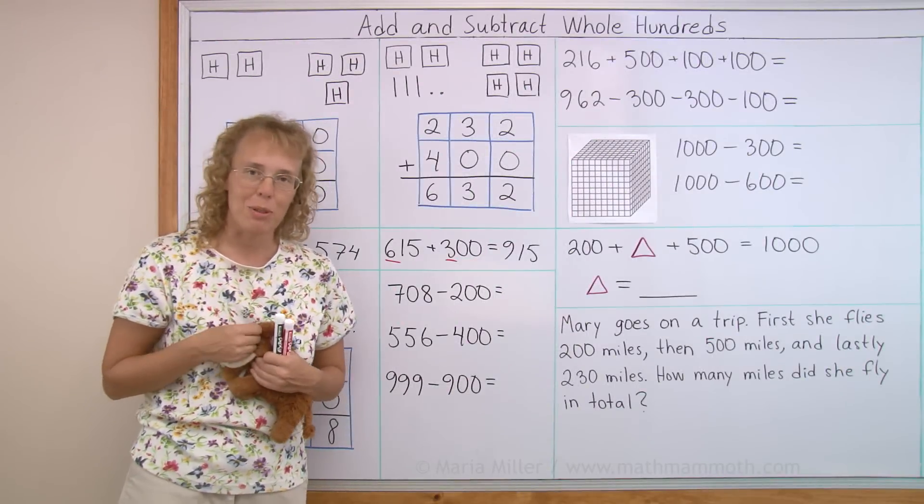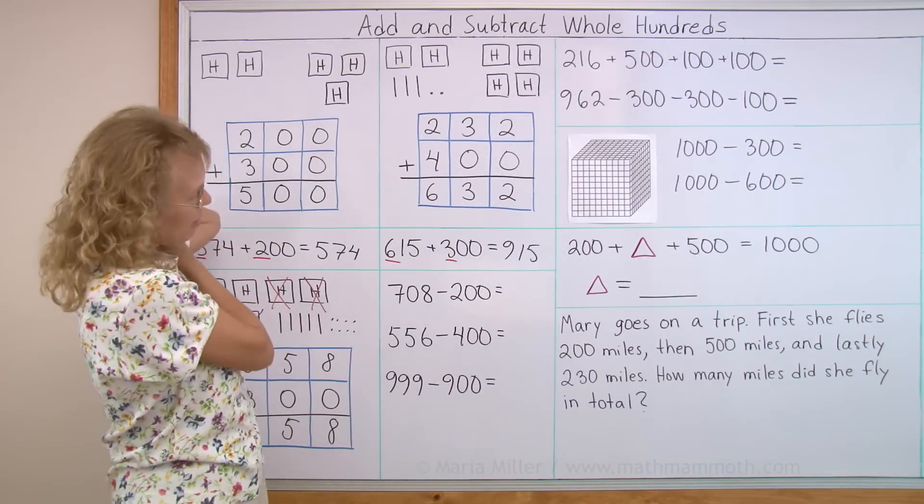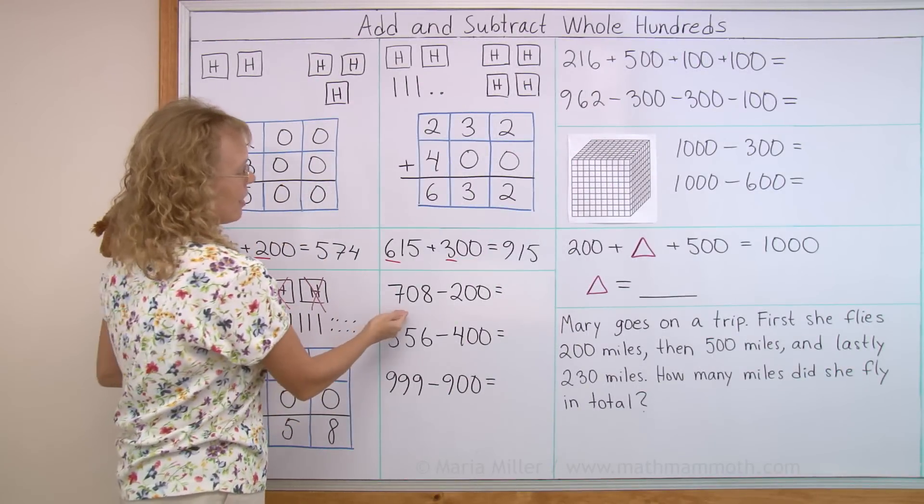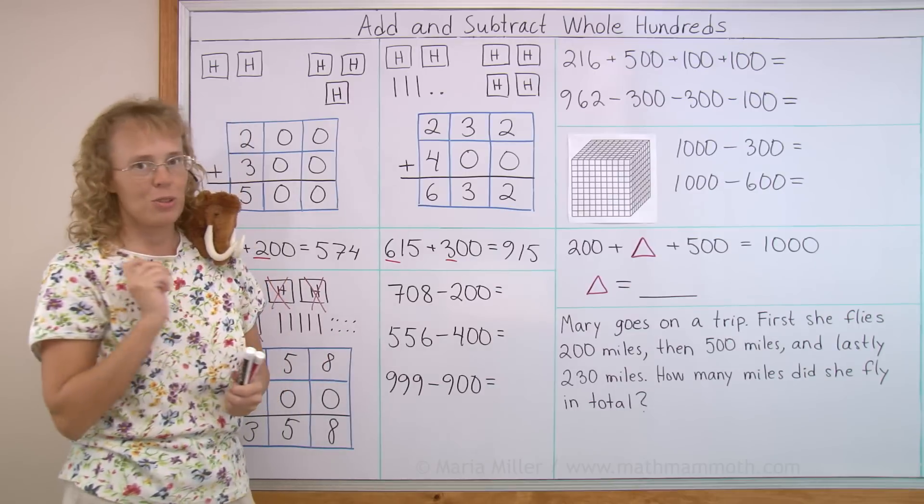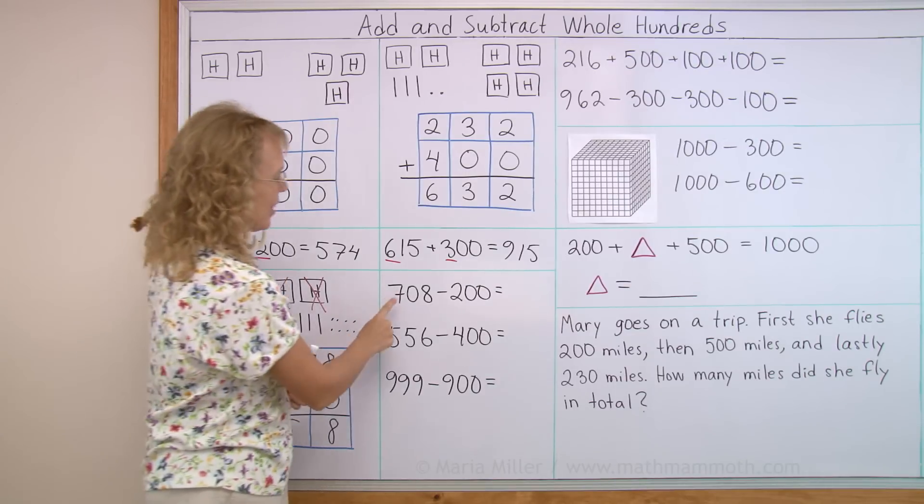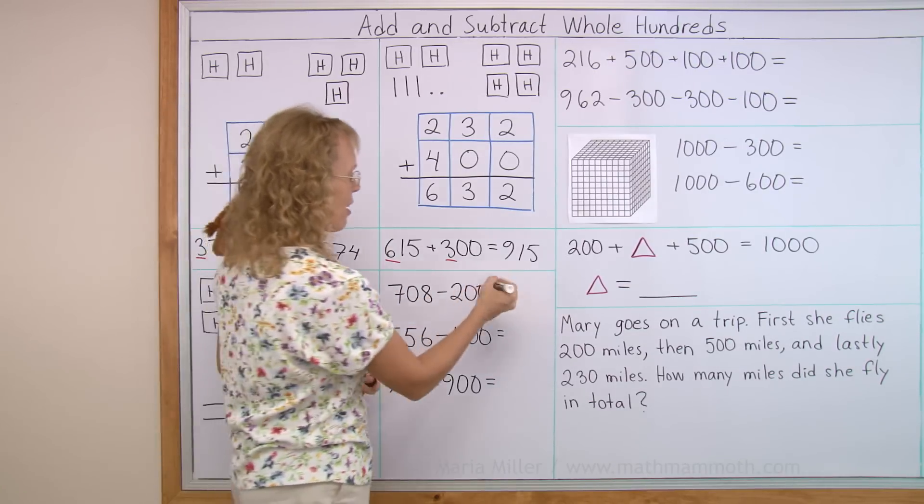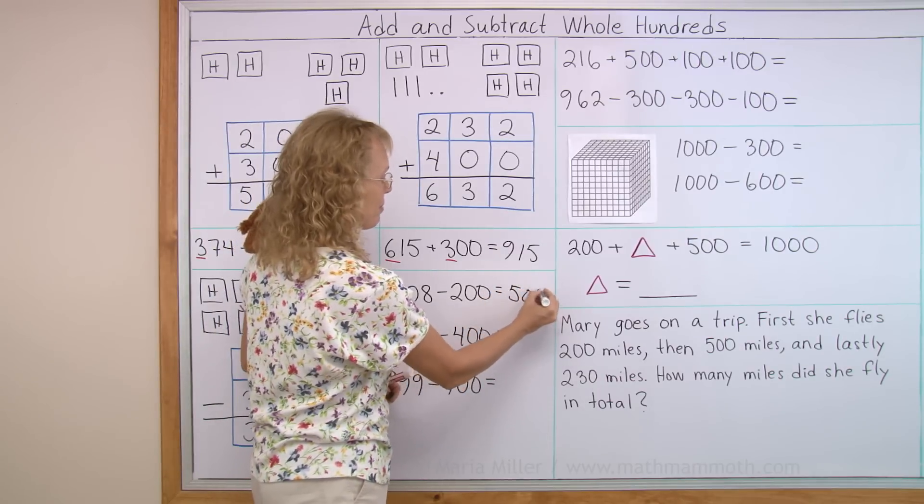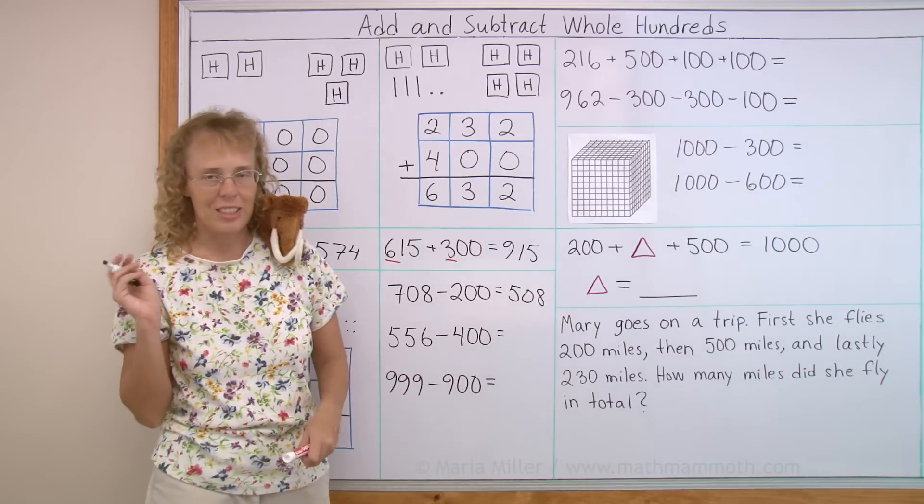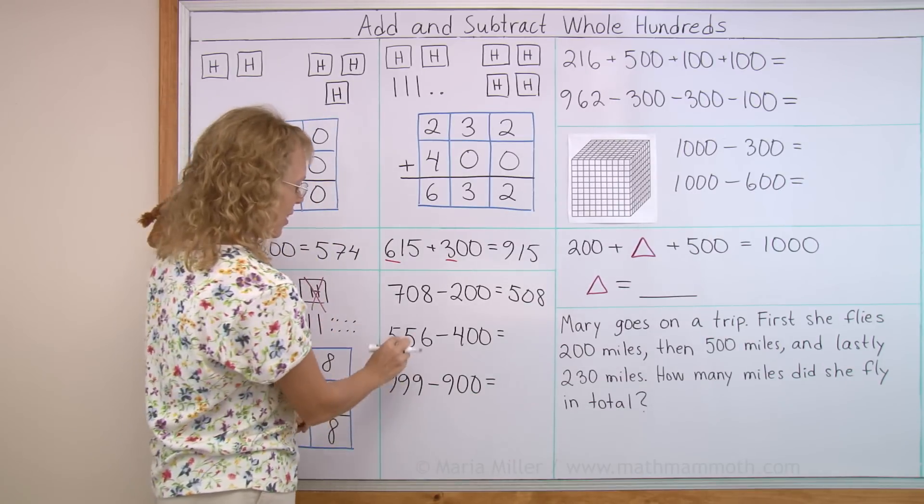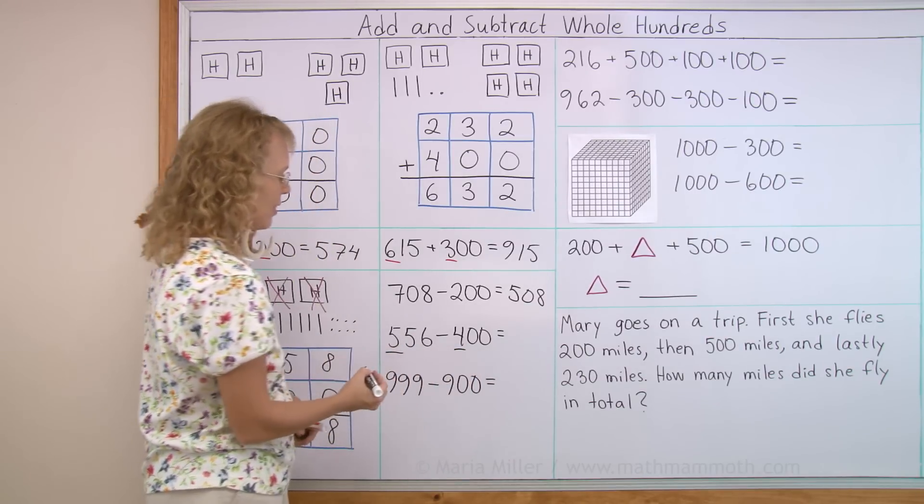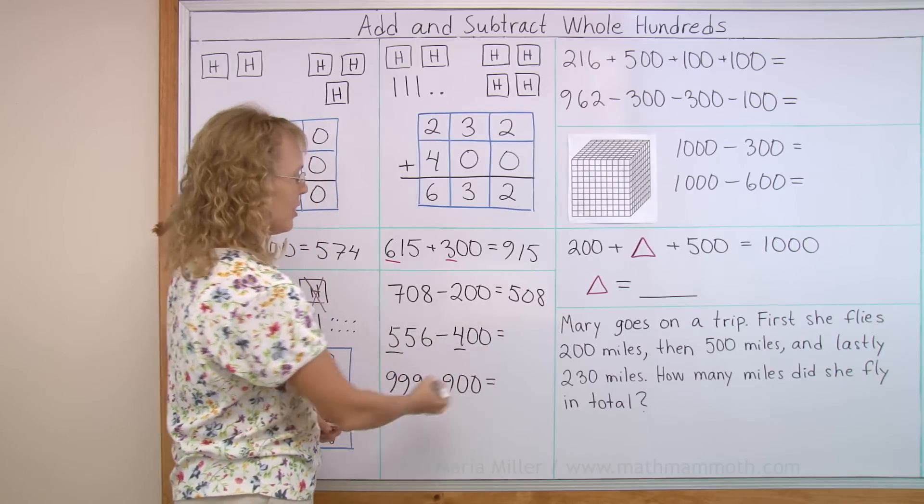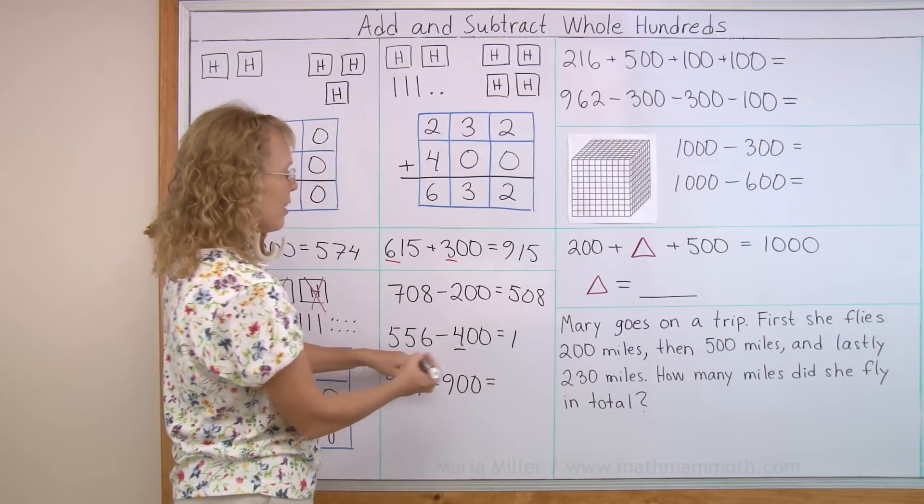So we can do these kind of problems mentally. We don't need to write them under each other. 708 minus 200. Can you do that? It's like 700 minus 200, we're just going to get 500. And then these don't change. 556 minus 400. Just look at the hundreds. 5 minus 4, we are left with 100 only, and then the 56.